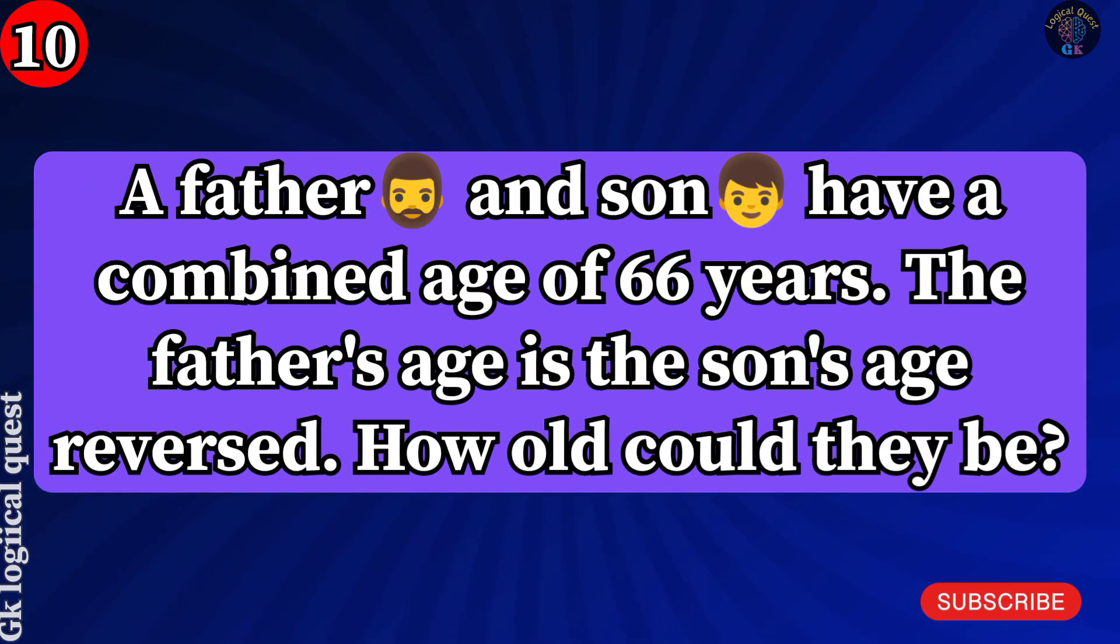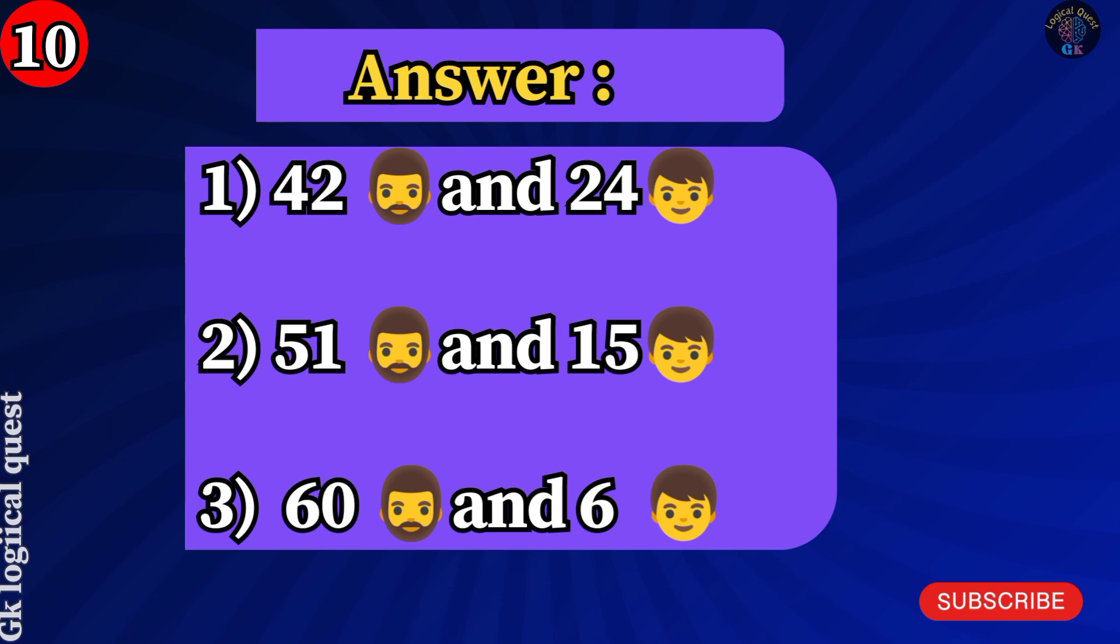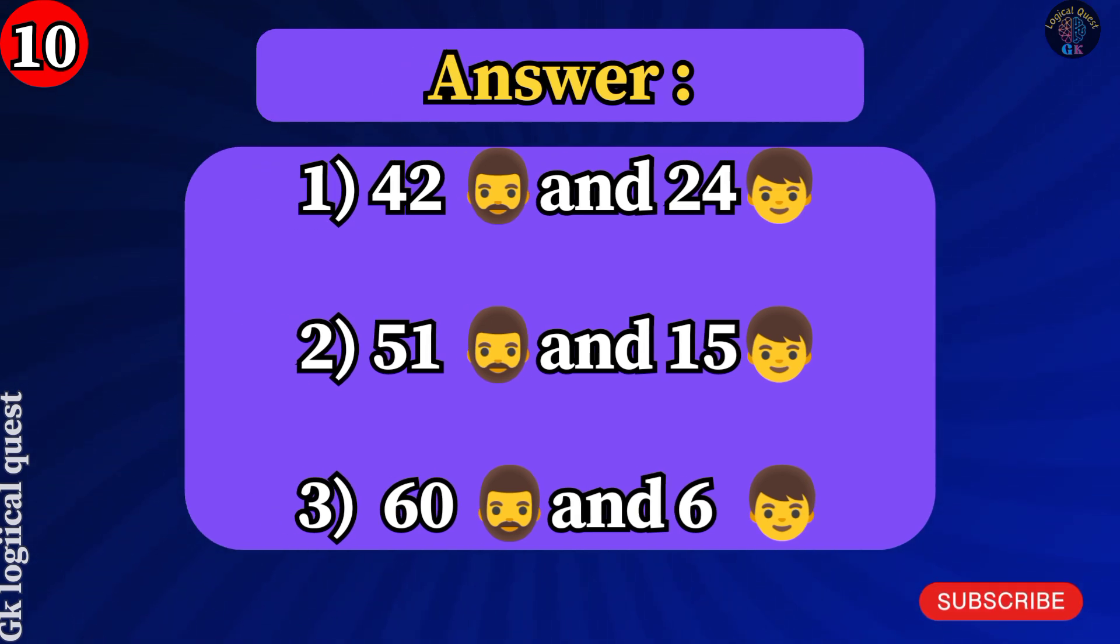A father and son have a combined age of 66 years. The father's age is the son's age reversed. How old could they be? Answer: Well, actually there could be three possible answers to this. 42 and 24, 51 and 15, or 60 and 6.